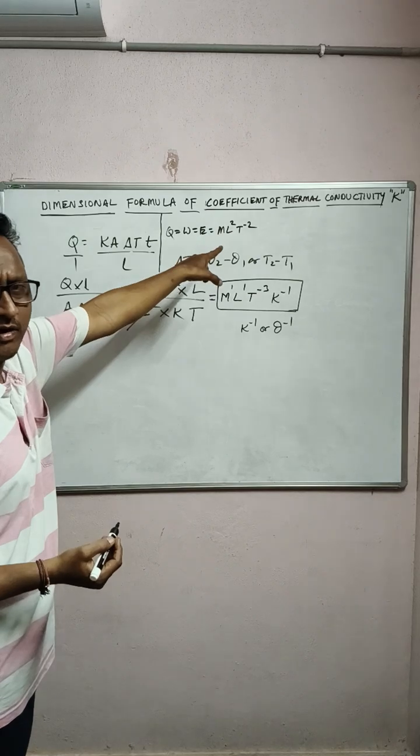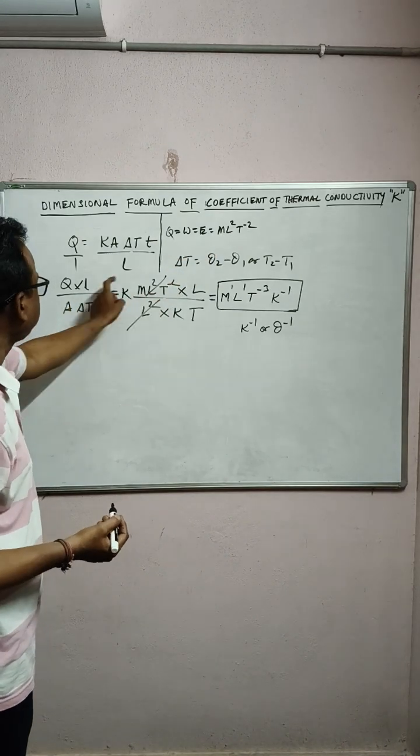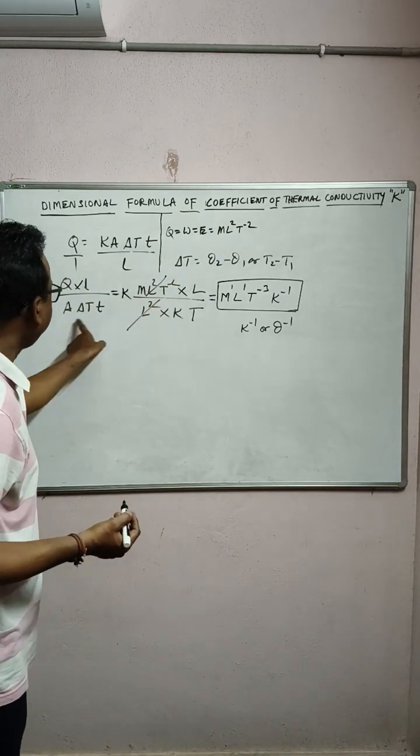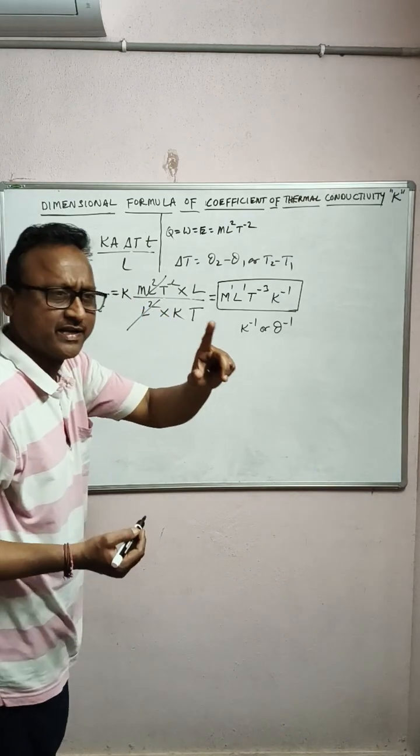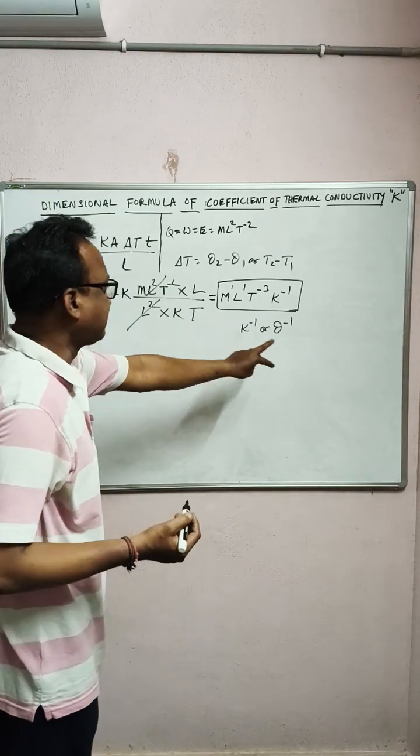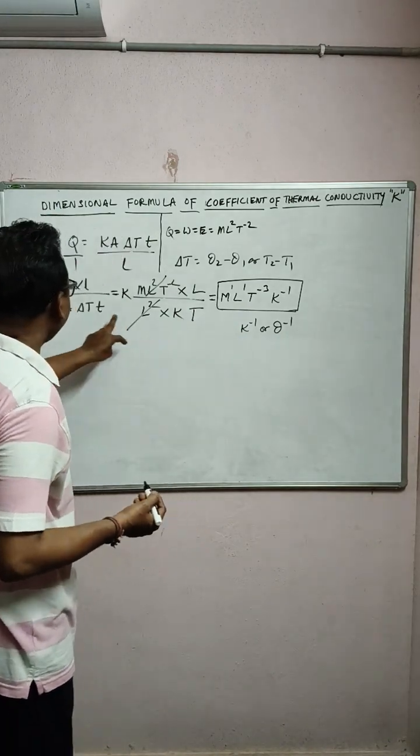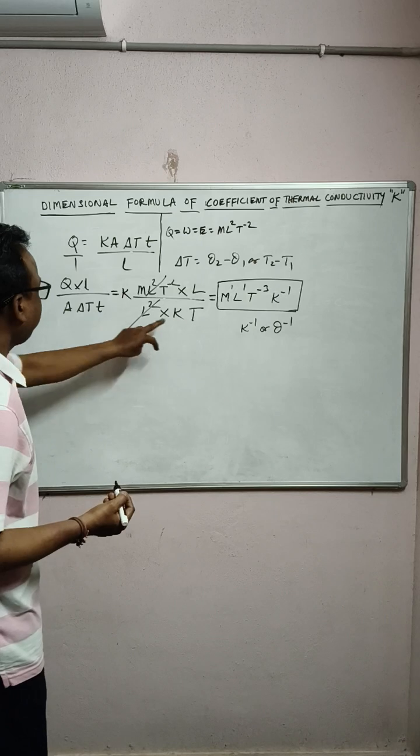Q means nothing but energy or work: ML²T⁻². Again into L for length. Area is L², L into L. ∆T you can write either θ or Kelvin temperature K. In some books they follow θ and some books use Kelvin K. And time again T.